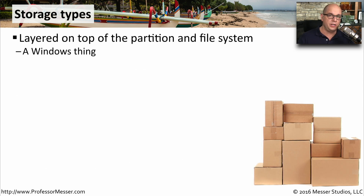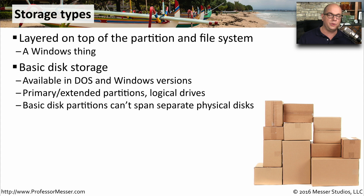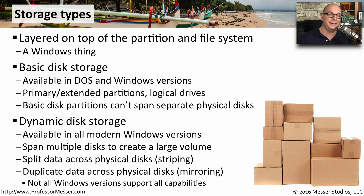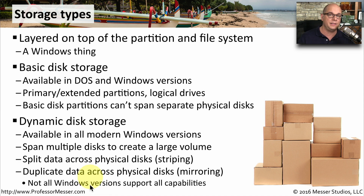Microsoft adds an additional layer on top of partitions and file systems called storage types. The fundamental storage type is a basic storage type, which allows you to have basic and extended partitions. These act as independent standalone devices. Modern Windows versions allow you to define a disk as a dynamic disk. This allows you to do interesting things, like spanning multiple disks together to look like one large volume, splitting data across physical disks by striping information, or creating a mirror — effectively duplicating exactly the same data across separate physical disks. Not all versions and editions of Windows support all of these different features within dynamic disks, so you'll need to look at your documentation to see what options are available.